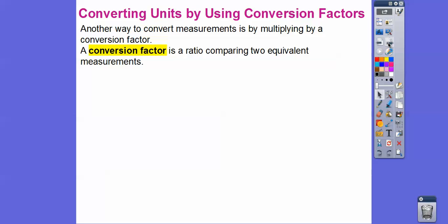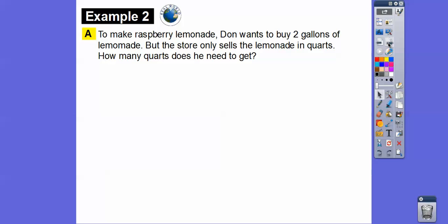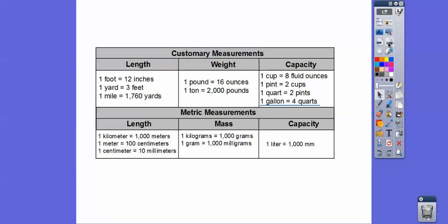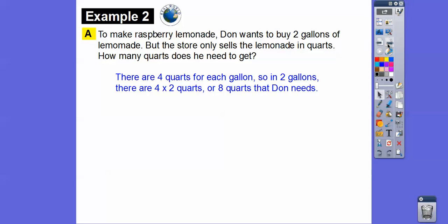Another way to convert measurements is by multiplying by the conversion factor — a ratio comparing two equivalent measurements. To make raspberry lemonade, Don wants to buy two gallons, but the store only sells lemonade in quarts. One gallon is four quarts, so two gallons times four quarts per gallon equals eight quarts.